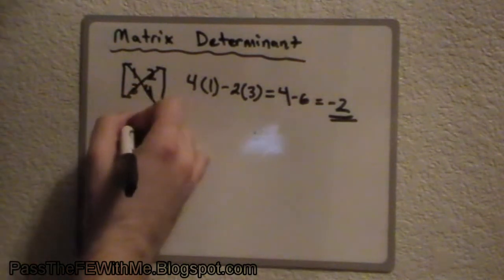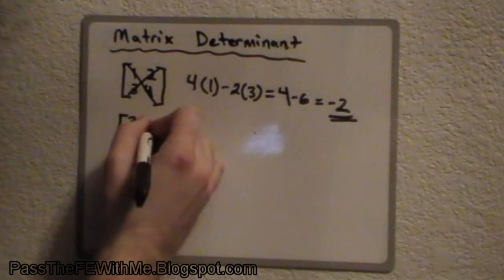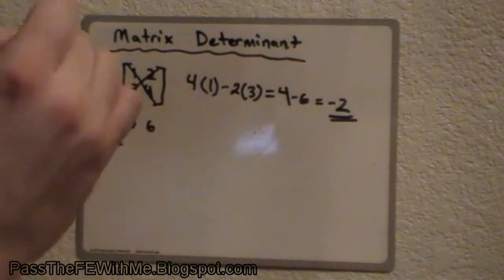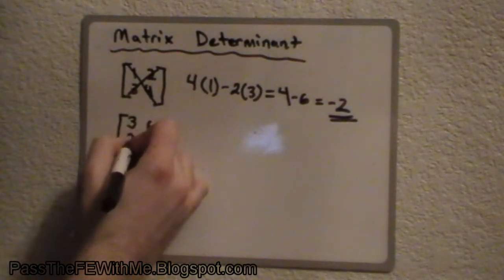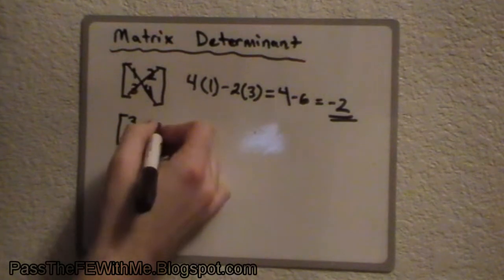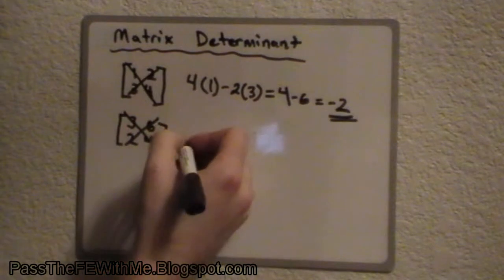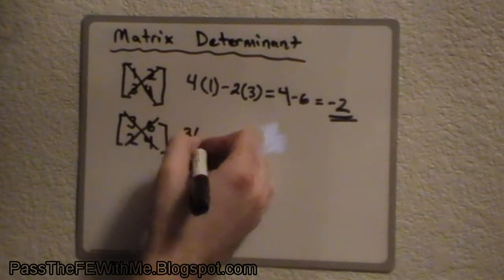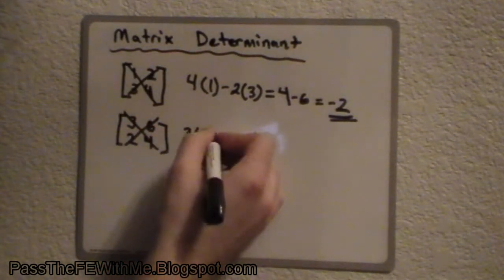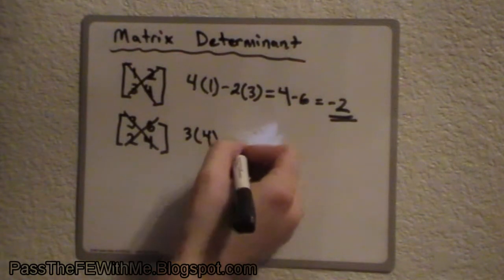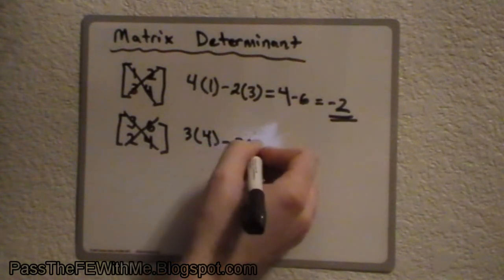We'll do the first row, 3, 6. And we'll do 2 and 4 on the bottom row. Well, again, let's draw our diagonal lines. Go 3 times 4, minus 2 times 6.